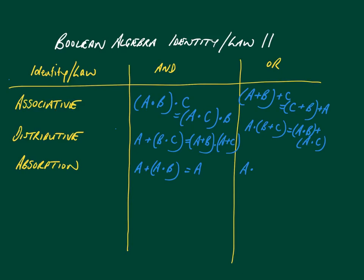And the same for the second expression: a AND (a OR b). If a is 1, it feeds into the OR gate, and because a is 1, that automatically outputs a 1, making the overall output 1. If a is 0, the output is going to be 0. So the simplification in this case is simply that a AND (a OR b) equals a.